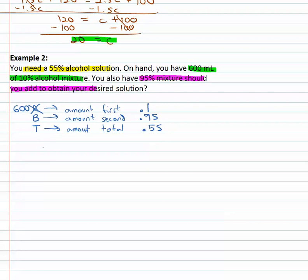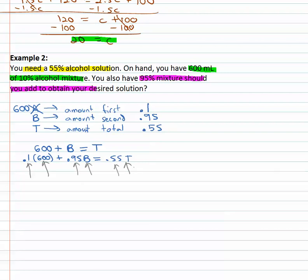Now we can make the equation for the amount: we started with 600, added some unknown amount B, to give us the total T. The second equation represents the values: 0.1 times 600 plus 0.95 times B equals 0.55 times T. Again we see the pattern — percent times amount, percent times amount, percent times amount all the way across — and we're set up to solve by substitution.